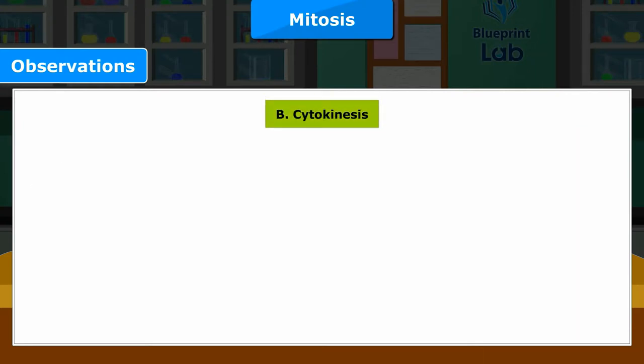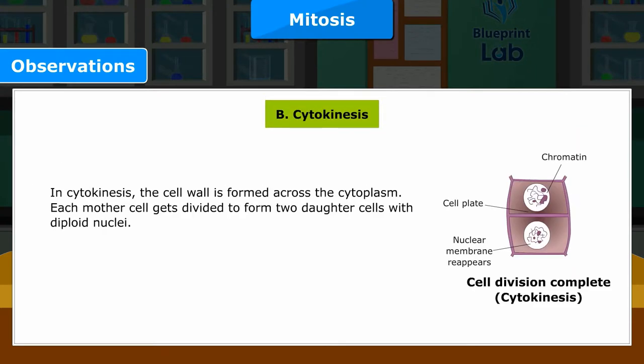B. Cytokinesis: In cytokinesis, the cell wall is formed across the cytoplasm. Each mother cell gets divided to form two daughter cells with diploid nuclei.